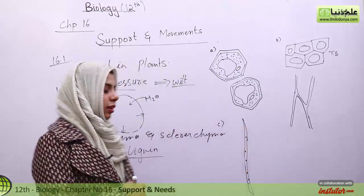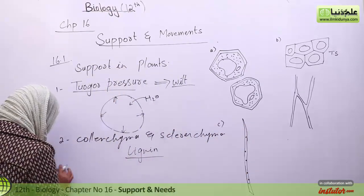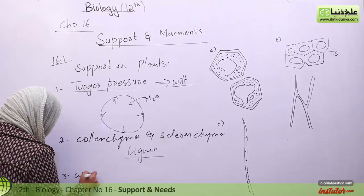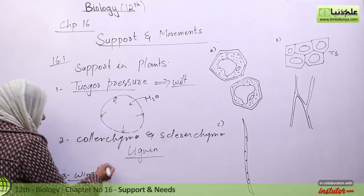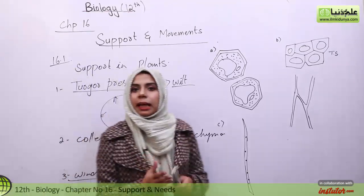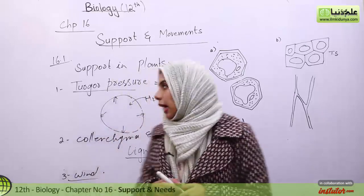The third factor is wind. Wind helps the plant in support — when the stem is exposed to wind, it develops resistance and in return the plant gains structural strength.